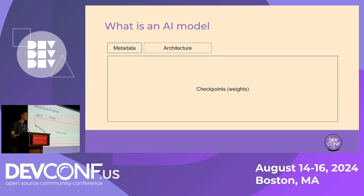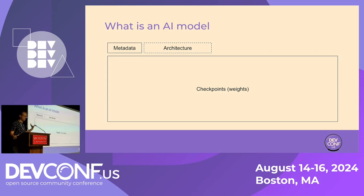Before we try to come up with a solution, I'd like to think about what an AI model is technically. Whatever format I choose, it's basically three things: a little bit of metadata, the architecture of the model — which doesn't have to be present since it may just be a pointer to a well-known architecture in the SDK — and most importantly, the weights: the individual tensor weights. It's huge.